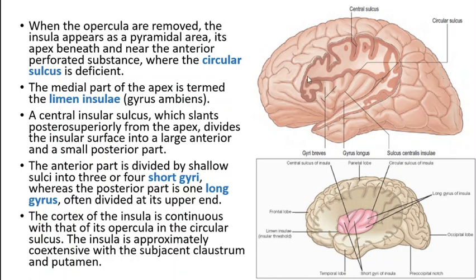What you see now is the circular sulcus — this is its cut edge. When the opercula are removed, the insula appears as a pyramidal area with the apex directed downwards. This is the region where the circular sulcus is deficient — the dark maroonish boundary you see is the cut edge, so obviously the sulcus is absent there.